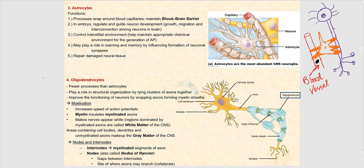The third type of neuroglia in the central nervous system are astrocytes. They have many functions, one of which is maintaining the blood-brain barrier. Looking at the picture, we have a blood vessel, a neuron, and the starfish-looking astrocyte. Astrocytes have cytoplasmic extensions — sort of like tentacles — that contact both the blood vessel and the neuron. Any substance in blood must literally pass through the astrocyte before making contact with the neuron.